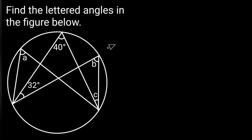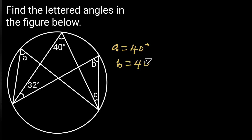Find the lettered angles in the figure below. Solution: A is equal to 40 degrees, B is equal to 40 degrees, and C is equal to 32 degrees. Reason: angles in the same segments are equal.